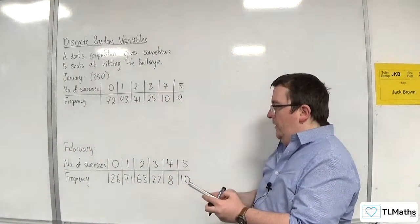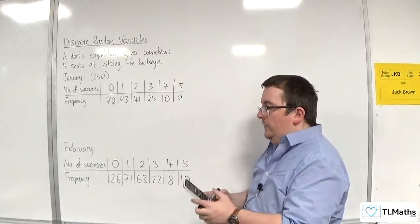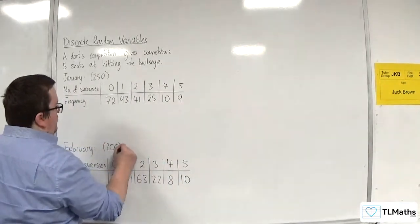For February, we've got 26 plus 71 plus 63 plus 22 plus 8 plus 10, so 200. We've only got 200 competitors for February.